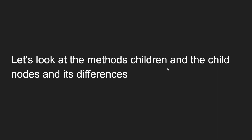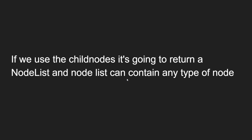Let's look at the methods children and childNodes and the difference between them. If you use childNodes, it is going to return a NodeList, and a NodeList can contain any type of node. We have already learned about NodeList. The different return types — HTMLCollection and NodeList — we have seen them. So when you use the childNodes method for an element, it will return a NodeList containing any type of node: comment node, text node, element node — any node.